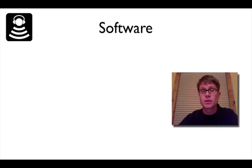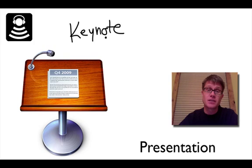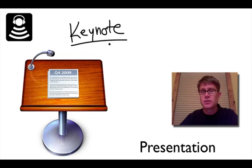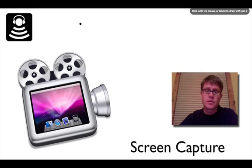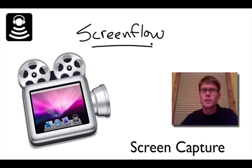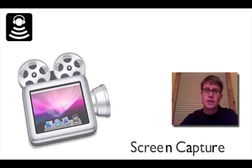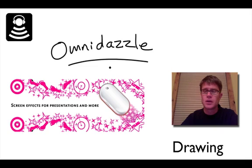Now let's get to the software. You need to start with presentation software — I'm using Keynote, which works great on Mac with iPhoto, but I could just as well use PowerPoint on a PC or Mac. Think out how you want to talk, what sequence of steps you want to go through, and lay it out in Keynote. Next is screen capture — I use ScreenFlow, which is recording everything I do right now, capturing the screen and the webcam video. And the last is drawing software — I use OmniDazzle, which allows me to scribble on the screen and quickly erase it.